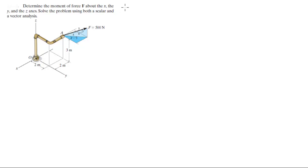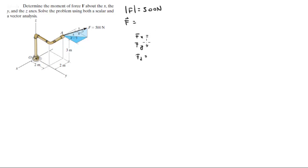The first thing you need to do is find the Cartesian vector form of the 500N force. The Cartesian vector form is given by an X component, a Y component, and a Z component. Let's start with the Z component — it's the easiest. The Z component is given by 500 times 3 over 5, which is 300.